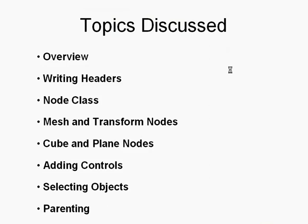After that, we're going to create the node class — our abstract class that lies at the heart of the entire node idea, the whole scene graph. From there, we're going to create the mesh and transform nodes, which will inherit from the node class. And from that, we're going to be creating the cube and the plane nodes, which are basically our primitives.